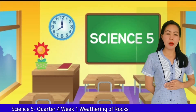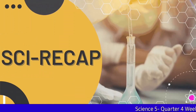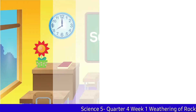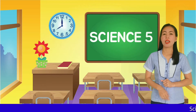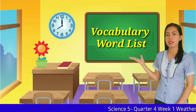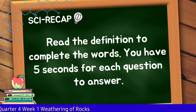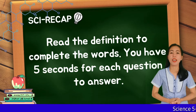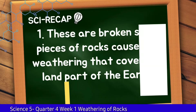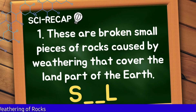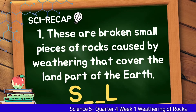Before we proceed to our topic, let us have a short recap. In Grade 4, you have learned the different types of soil. Here is a vocabulary word list with missing letters. Read the definition to complete the word. You have only 5 seconds to answer each question. Number 1: These are broken small pieces of rocks caused by weathering that cover the land part of the earth.